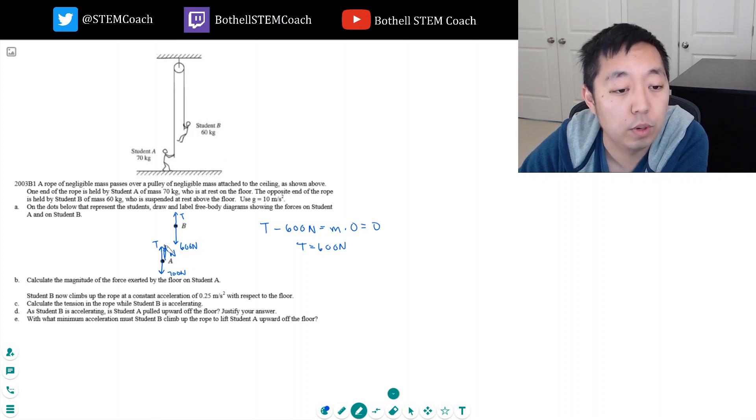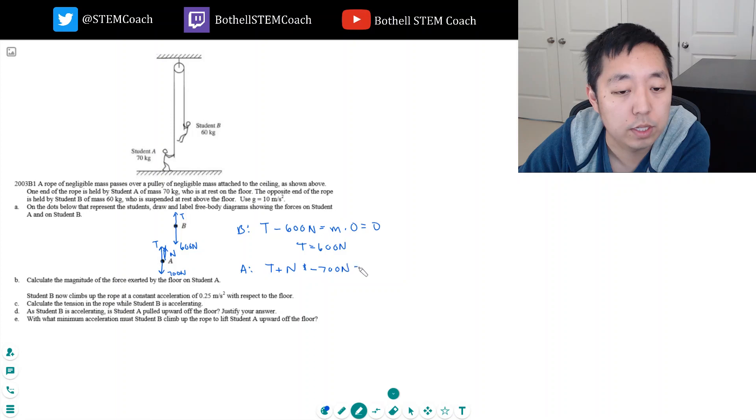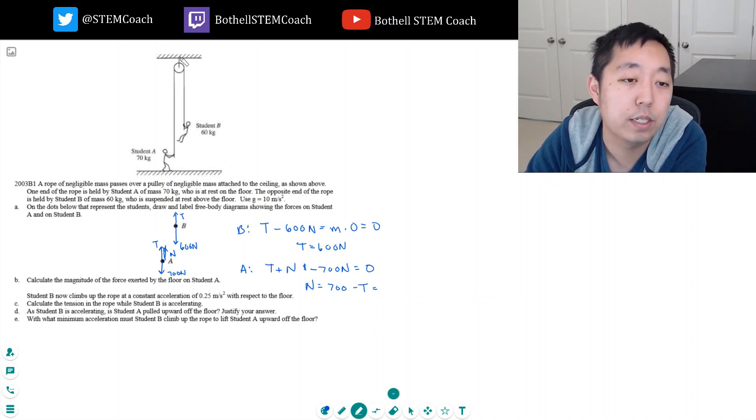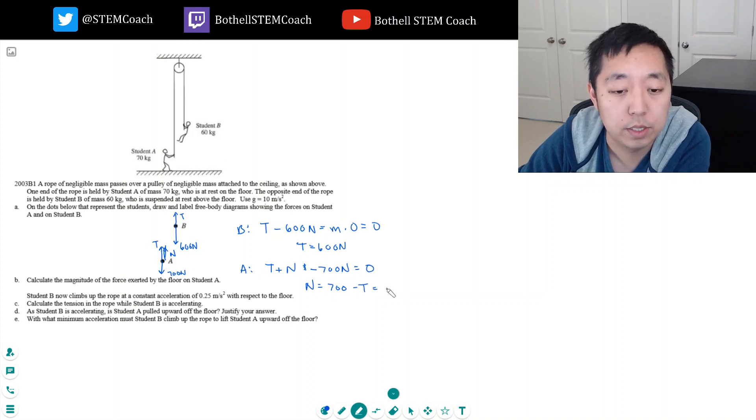This one, his upward force I got T. So this is student B. Here's student A. The net force equation, what's his net force? T plus the normal force minus 700 Newtons has to equal zero also because he's not accelerating. So solving for N, N is equal to 700 minus T. But I know from here because the rope is massless and there's no friction, the tension is uniform across here, so 700 minus 600 is 100.